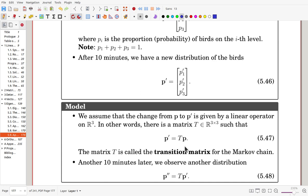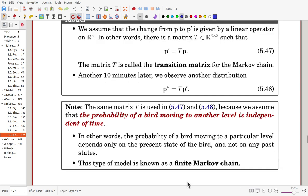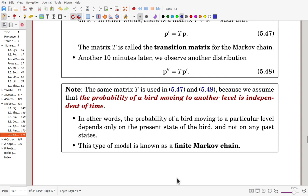In this case, the matrix T is called the transition matrix for the Markov chain. Another 10 minutes later, then we can observe another distribution. P double prime is T times P prime.